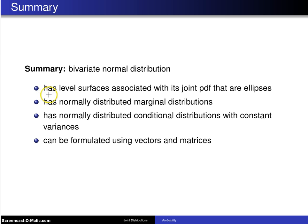First of all, the bivariate normal distribution has level surfaces associated with its joint probability density function that happen to be ellipses. And the slope of the major axis of those ellipses tells you whether the correlation between the two random variables is positive or negative.